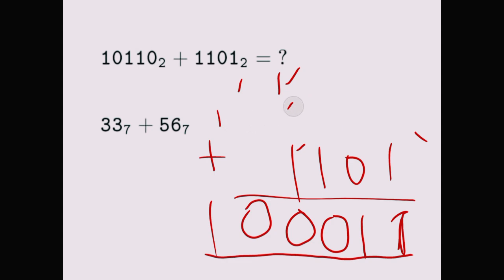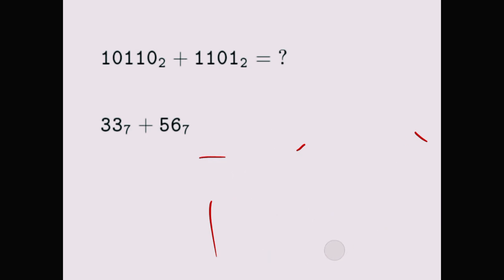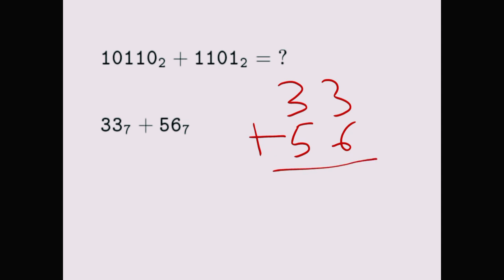Let's see the second example to understand this better. Here we have 33 plus 56 in base seven. So we are adding in base seven. Three plus six is nine — we can't write nine; nine is not a number in base seven. So nine divided by seven is one remainder two, so we write the remainder two, then carry the one.